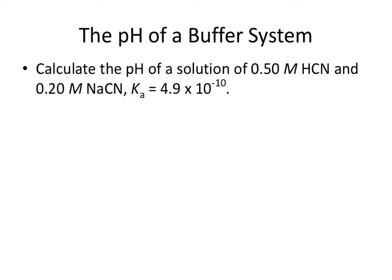Let's do a practice calculation: calculate the pH of a solution that is 0.5 molar in HCN (hydrocyanic acid) and 0.2 molar in sodium cyanide. The most important thing is recognizing this as a buffer problem — you're looking for a weak acid and its conjugate base. The word 'buffer' won't always appear in the question, so you need to identify it yourself.